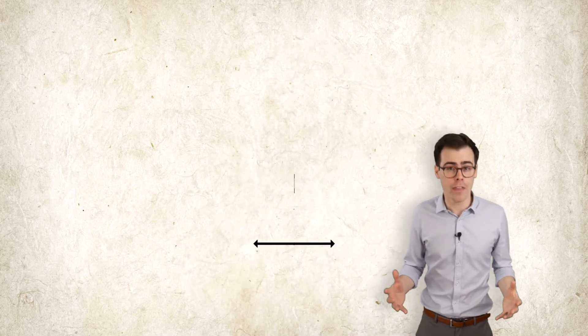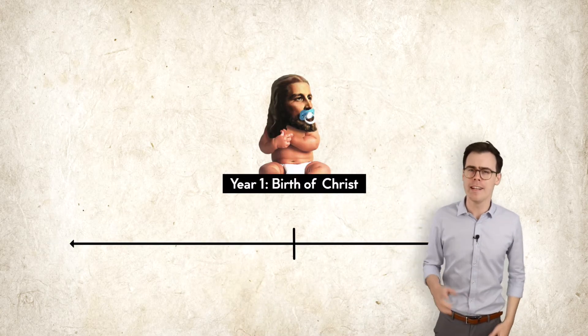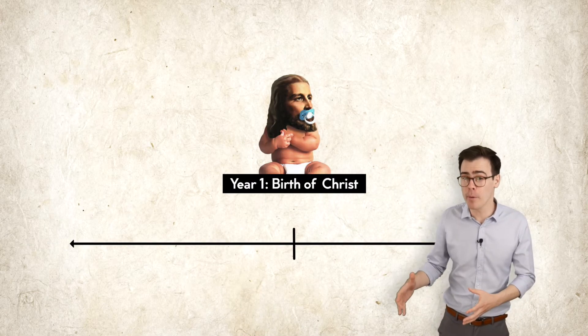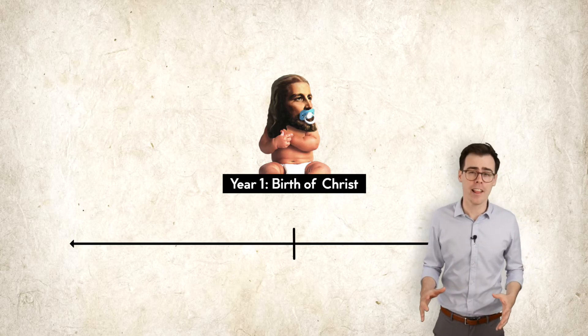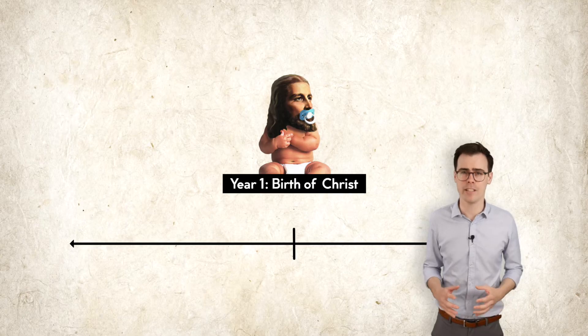The first thing is that the birth of Christ is year one. Now obviously time existed before the birth of Christ, but the Gregorian calendar was made by Christians, so they thought that was a pretty good day to start counting from.